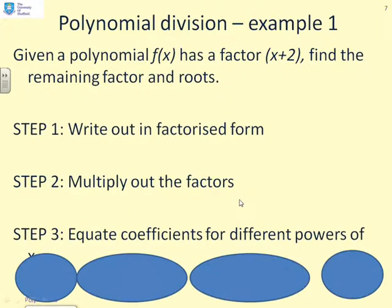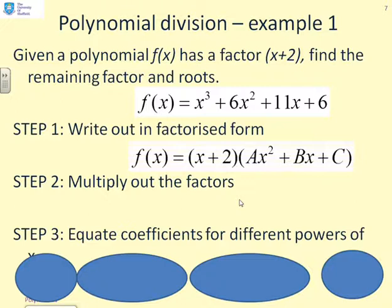So, here's an example. We're going to give you a polynomial f(x), which has a factor (x+2). And we want you to find the remaining factors and roots. Here's the polynomial f(x) = x³ + 6x² + 11x + 6. And you've been told it has a factor (x+2). So, first, I write this out in factorized form, including the factor (x+2). So, here we go. f(x) = (x+2)(ax² + bx + c). And you'll notice, I don't know what values these coefficients are yet. I'm just postulating that I can write it like this.